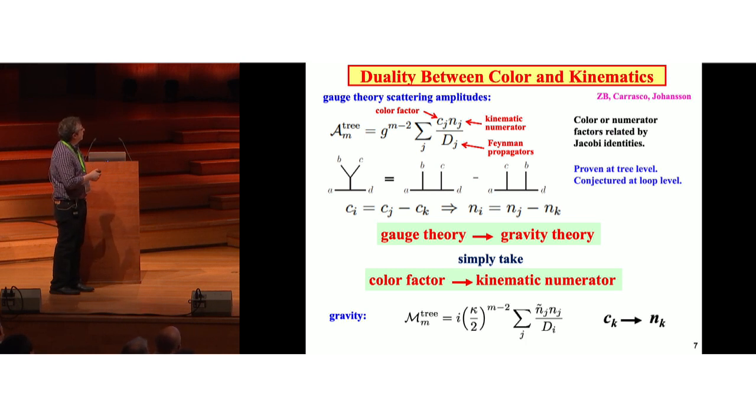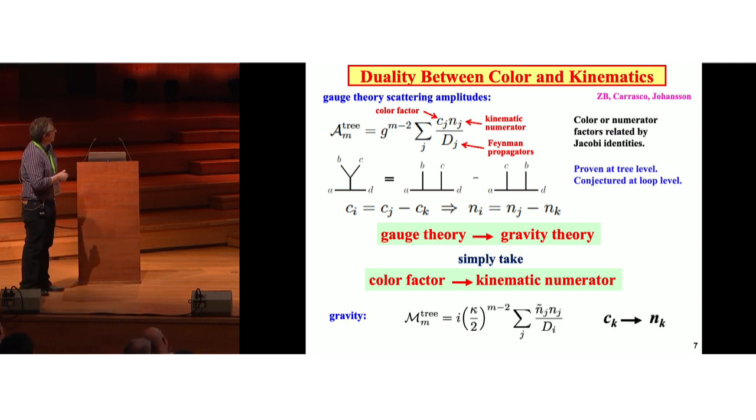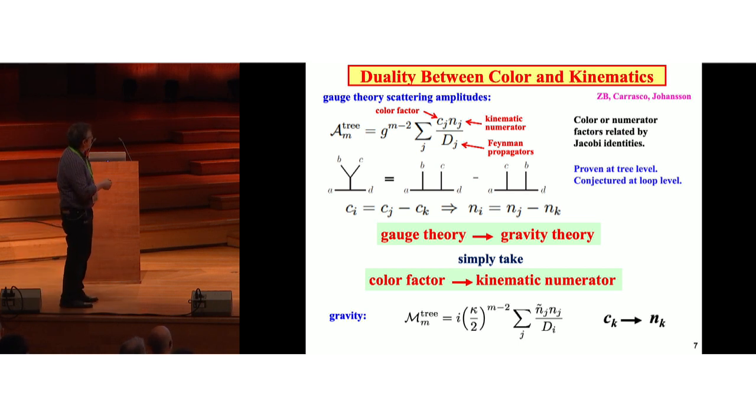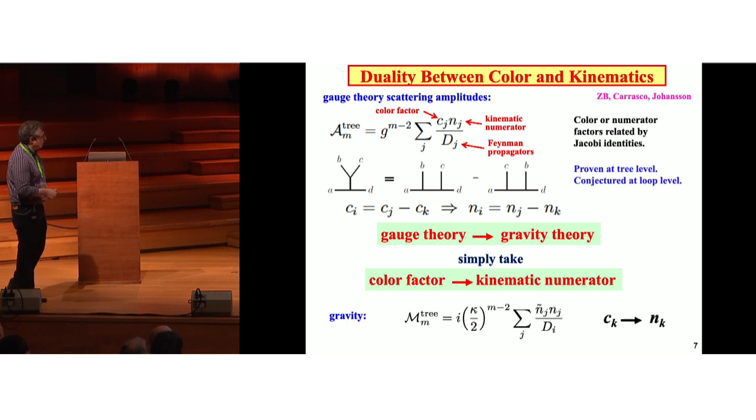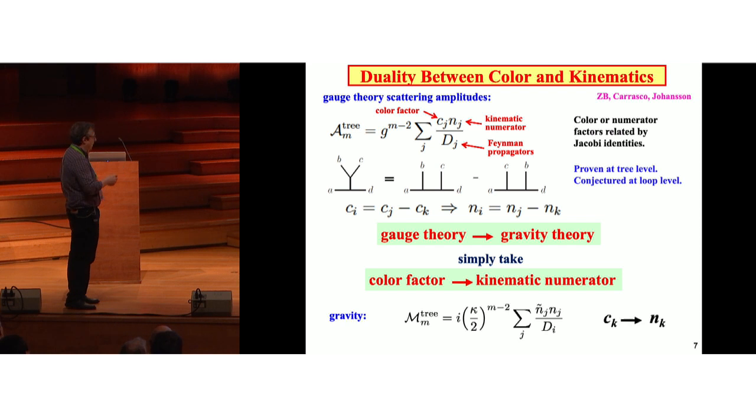There's actually a much better way of doing this, a much cleaner way, which we call duality between color and kinematics. I'll just summarize it very briefly. Take a tree amplitude of gauge theory, rewrite it as a sum over diagrams with color factors, kinematic numerators, and Feynman propagators. The claim is that there's some way that you can rearrange these kinematic numerators such that they satisfy the same algebraic relations as the color factors. This is something that's proven at tree level and it's conjectured to hold at loop level where there's many examples. But the consequence of this is extremely powerful. It says if you want to go from gauge theory to gravity, you take the color factor, you replace it with a kinematic numerator, as simple as that, and that gives you this double copy form of the gravity amplitude. Here's for tree level. This n tilde just means that the two gauge theories don't have to be identical. They can be different gauge theories. This is our basic tool for thinking about gravity.